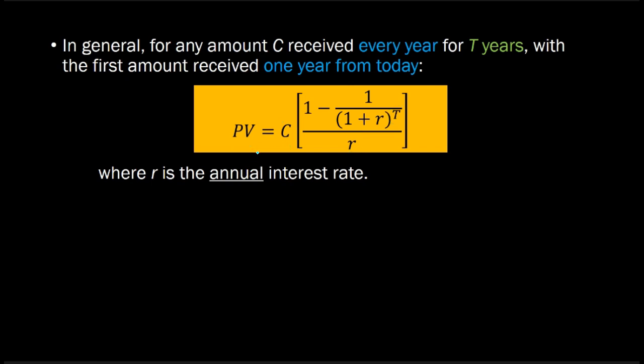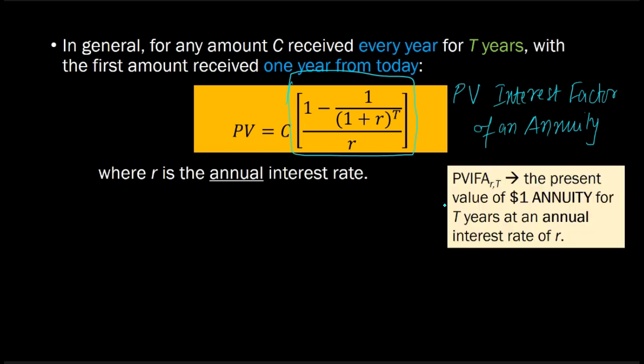It turns out that this expression in the bracket—everything but the C—is sometimes referred to as the present value interest factor of an annuity, or often abbreviated as PVIFA, where A is for annuity.